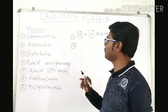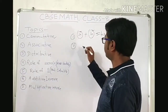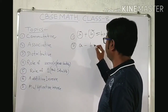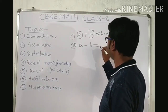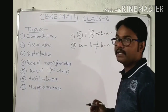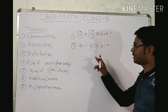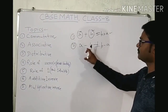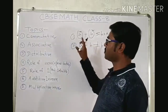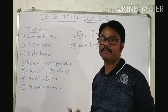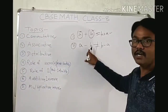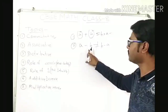Next, under subtraction — what happens? If A and B are rational numbers, then A minus B compared to B minus A — you will check that the value is not the same. That means subtraction is not commutative for rational numbers.